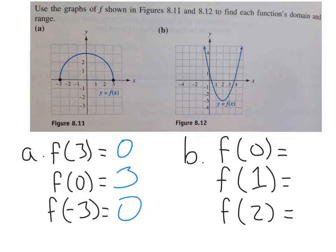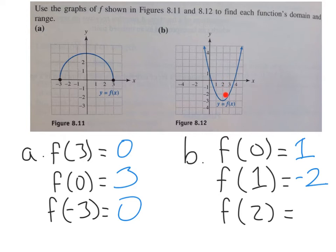For Part B with the other graph: f of 0 — at x equals 0, the graph is at 1, so f of 0 equals 1. For f of 1 — at x equals 1, the graph is down at negative 2, so f of 1 equals negative 2. For f of 2 — at x equals 2, the graph is at negative 3, so f of 2 equals negative 3.